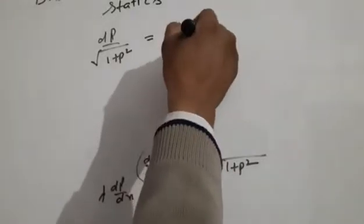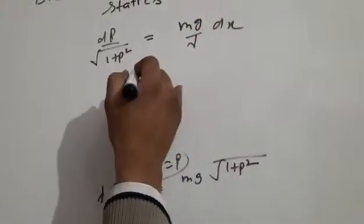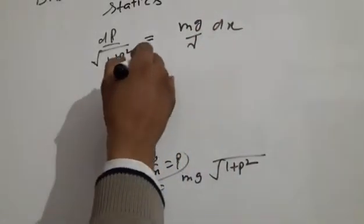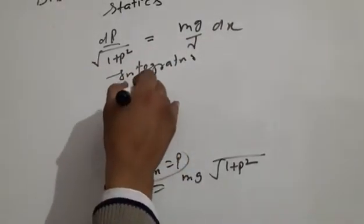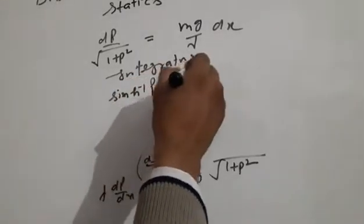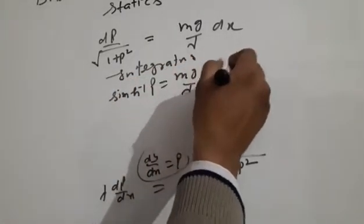Integrating, integrating, we get sine hyperbolic inverse p equal to mg upon lambda x plus c1.